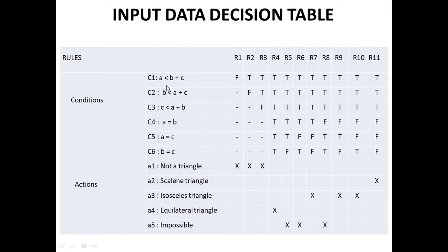The conditions are: C1 — a less than b plus c; C2 — b less than a plus c; C3 — c less than a plus b; and C4 — a is equal to b, a is equal to c, and b is equal to c. The possible actions are: not a triangle (cannot form a triangle), scalene triangle, isosceles triangle, equilateral triangle, and impossible.